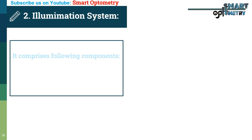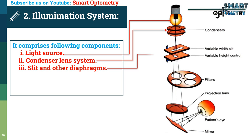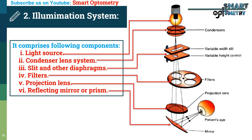Illumination System: The illumination system comprises the following components: 1. Light source; 2. Condenser lens system; 3. Slit and other diaphragms; 4. Filters; 5. Projection lens; 6. Reflecting mirror or prism.